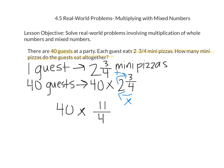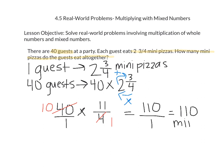We're multiplying 11 fourths by 40. Remember whenever you have a whole number, your denominator is going to be 1. Before we multiply across, let's check to see if we can simplify. Looking at 40 and 4, both have 4 in common. 40 divided by 4 is 10, and 4 divided by 4 is 1. Now we're ready to multiply: 10 times 11 is 110, and 1 times 1 is 1. So 110 over 1 equals 110. All together, they eat 110 mini pizzas.